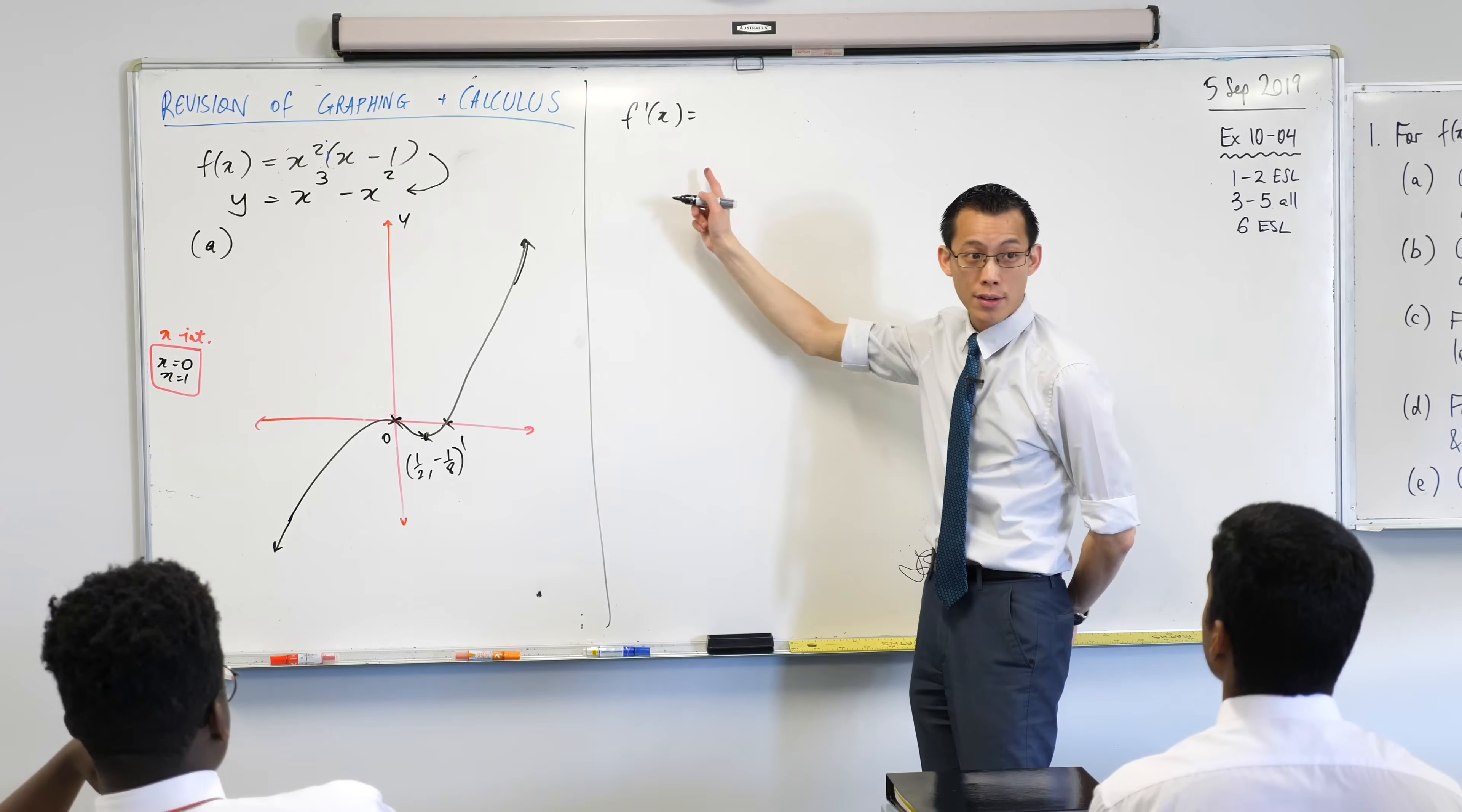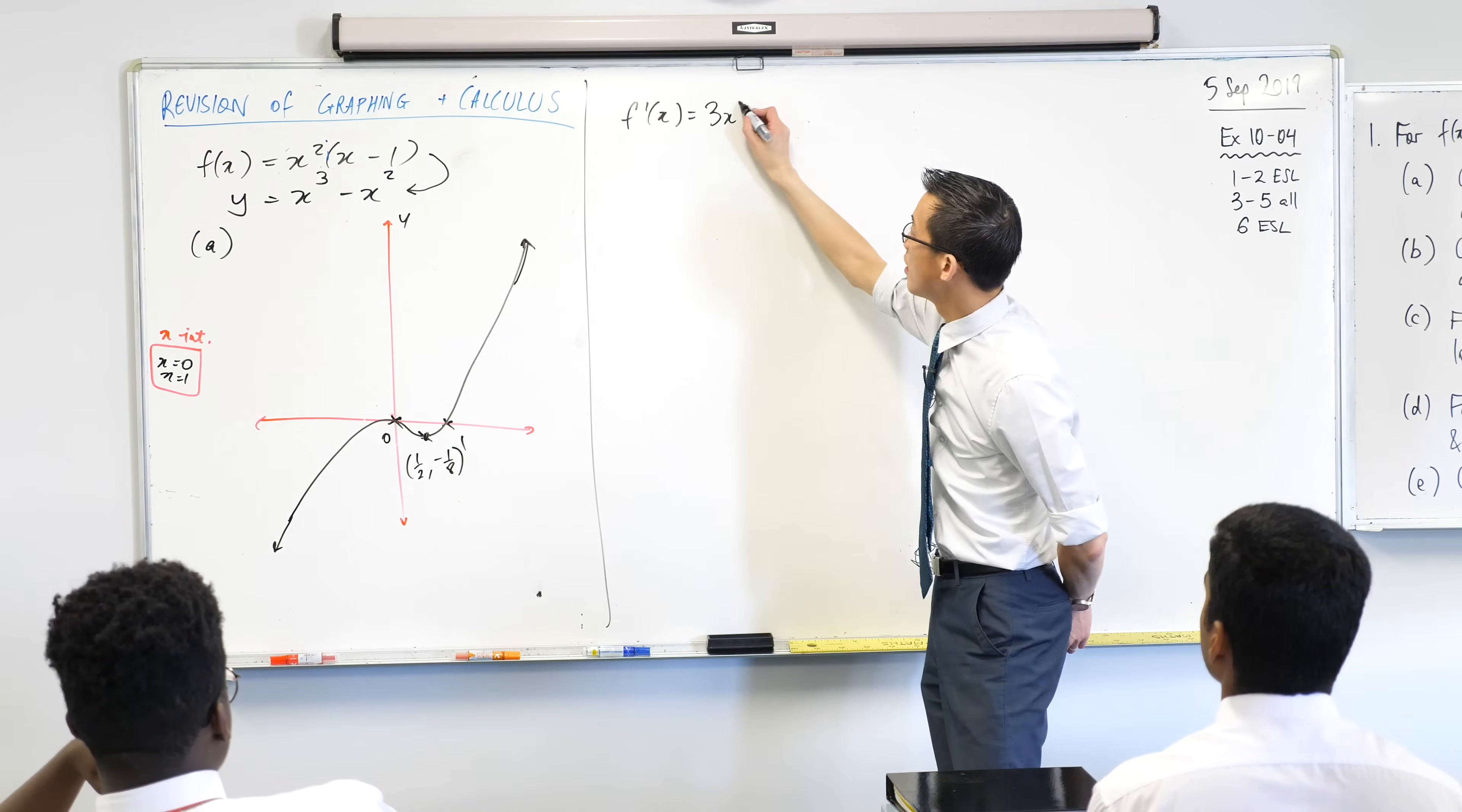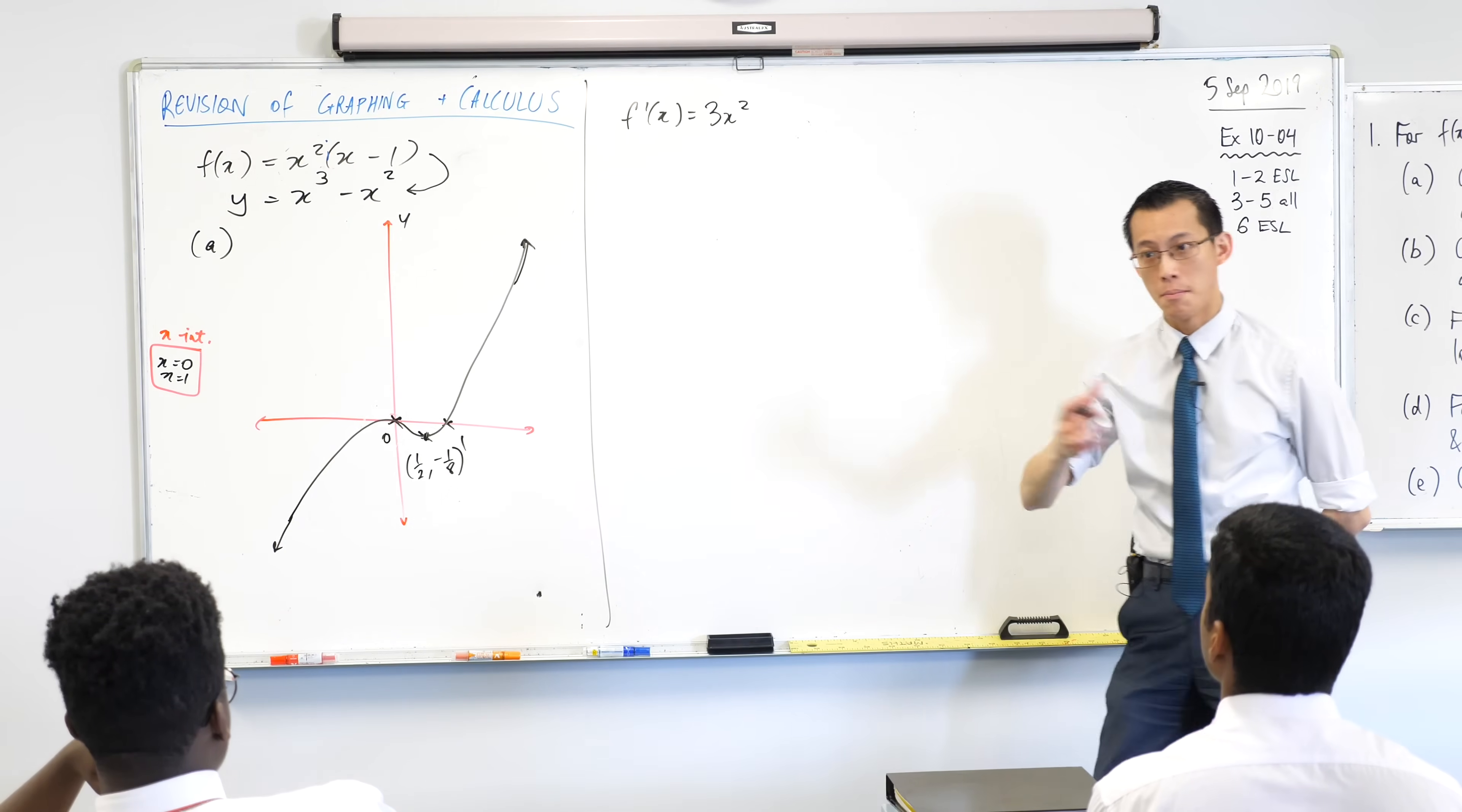So when I do the derivative, x cubed. Can you tell me the derivative of x cubed? 3x squared. Thank you very much. And then when you've got that minus x squared, its derivative is? Minus 2x.